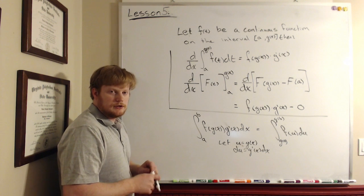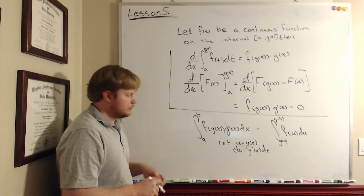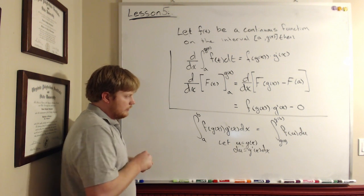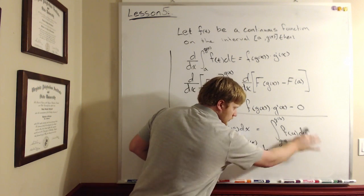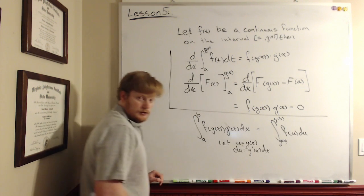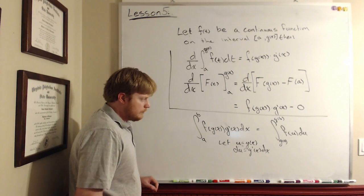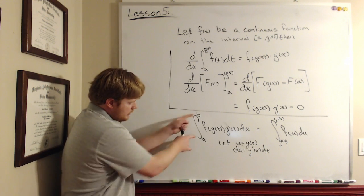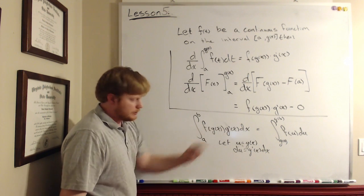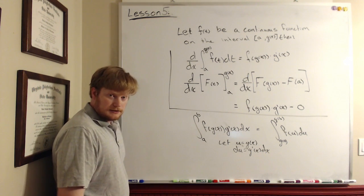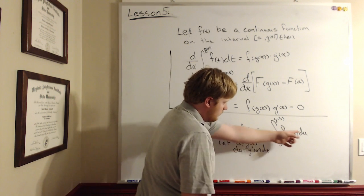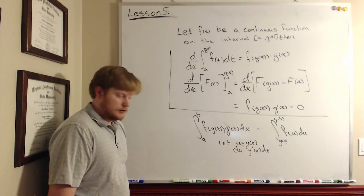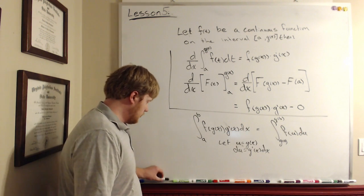That's u-substitution with a definite integral. When I evaluate the du, my bounds have to be in terms of u. Initially my bounds were in terms of x, but now they have to be in terms of u. This is a great multiple choice question.